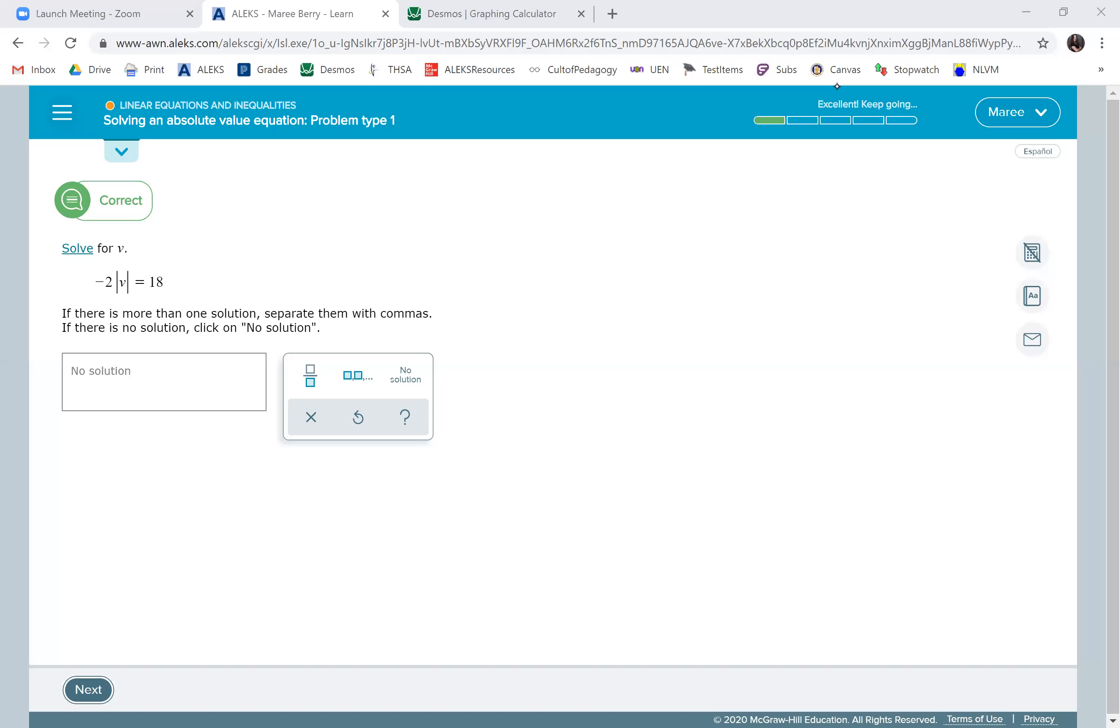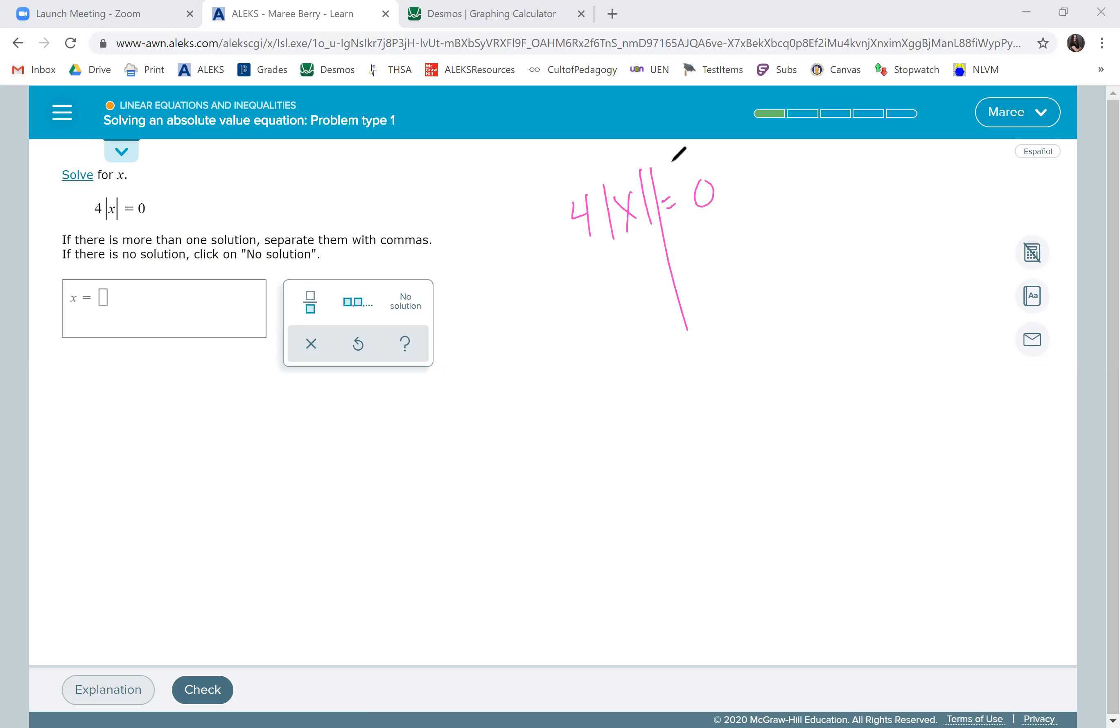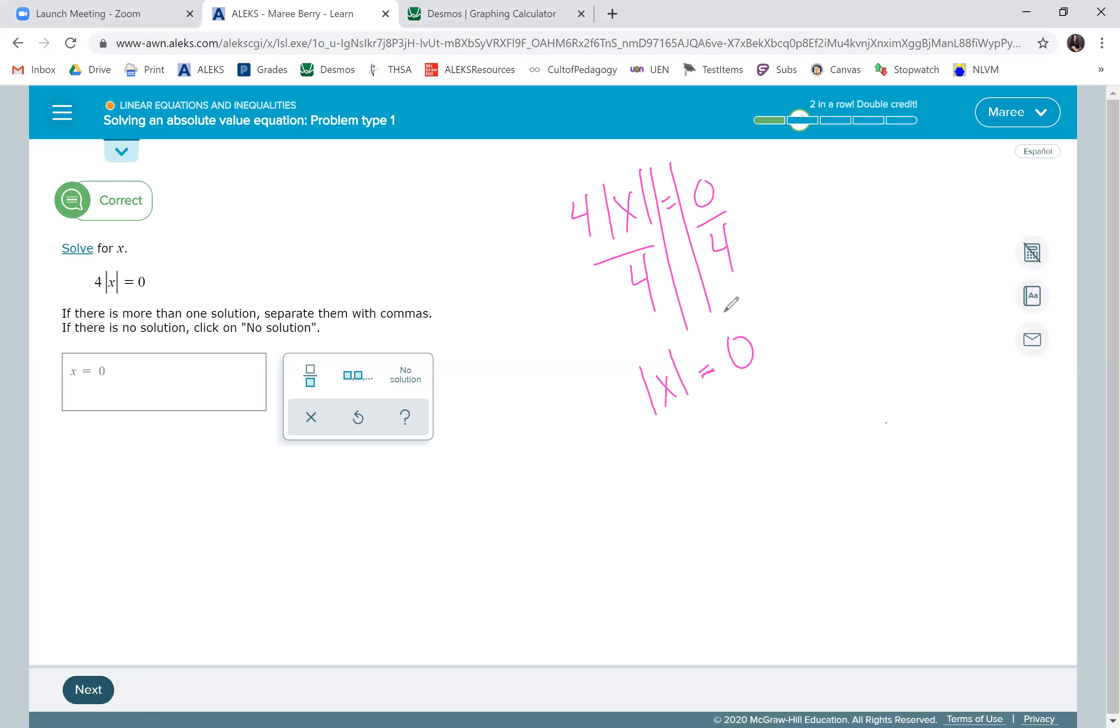Okay, we'll try another one. We have four times the absolute value of X equals zero. When you divide both sides by four, zero divided by anything is just zero. When you have the absolute value equal to zero, there's only one number that is zero units away from zero, and that is zero itself. So the answer would be zero. We're not going to have two solutions in this case. We'll just have one.